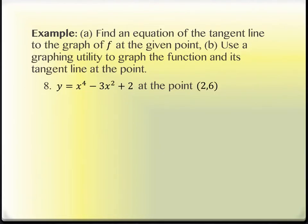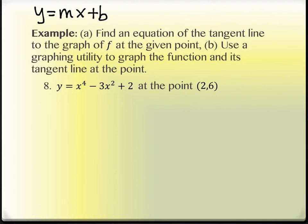Now we shift directions again. We've found general derivatives, then evaluated them at a point, and now we're going to find equations of tangent lines. To find an equation of a tangent line at a given point, we can use y equals mx plus b, or the point-slope form y minus y1 equals m times x minus x1. Both forms contain m, so we need to find the slope m — which means finding the derivative.